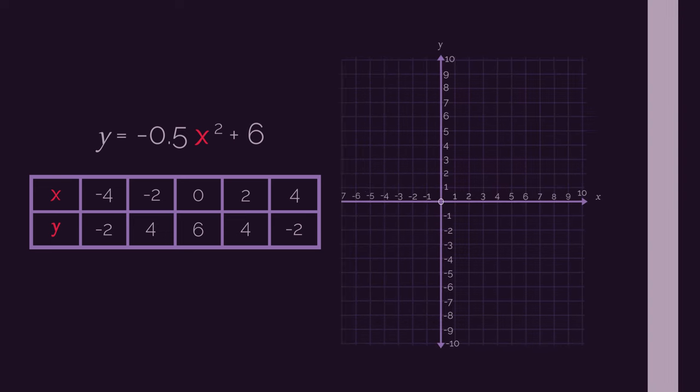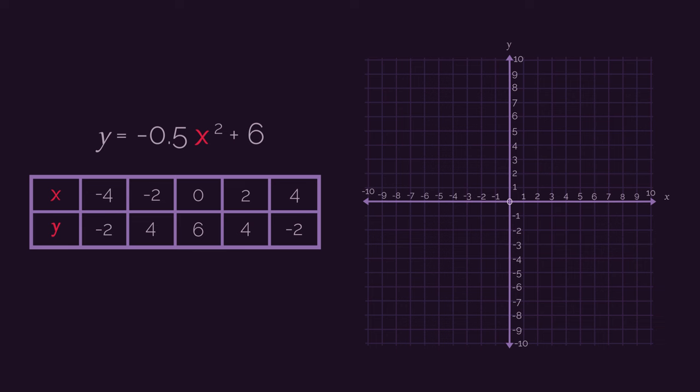So with our table of values, we can just go ahead and plot our graph. Join the points with a smooth curve. Use a pencil so that if you make a mistake, you can erase it and start again. And make sure you extend the graph across the whole grid. And as always, label the curve with the equation.